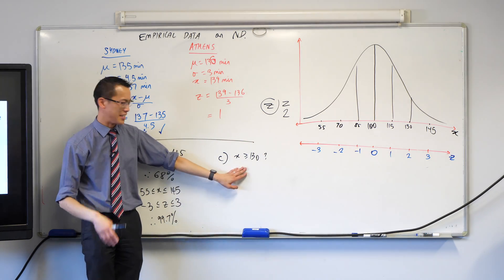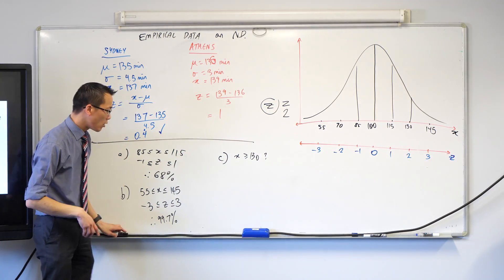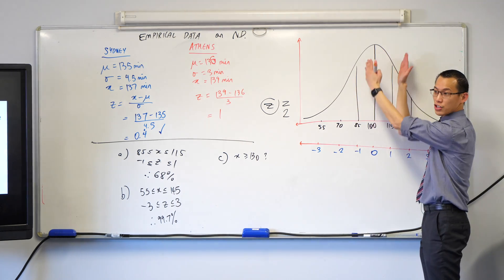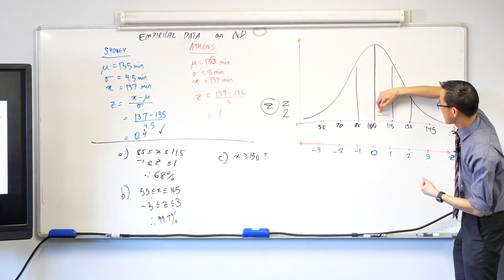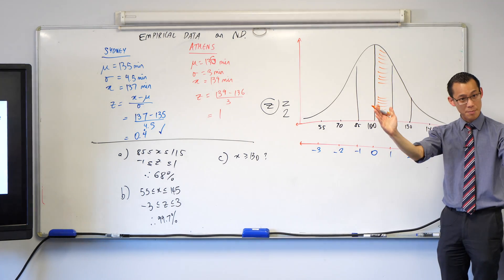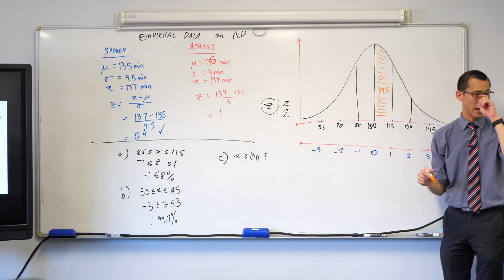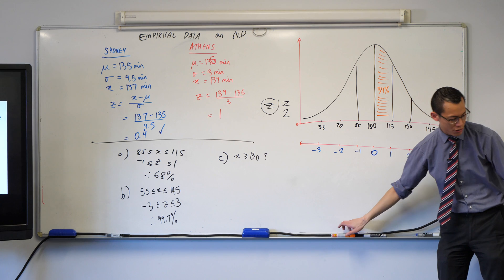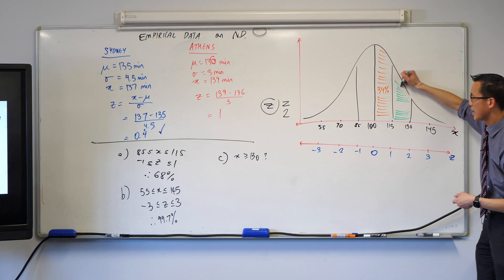I'll write x is greater than or equal to 130. How do I work this out? Let me look closely. Remember when we did part A? We said that the whole center section was 68%. So if I just take this right half from the mean to one standard deviation above, that's half of 68% — that's 34%.